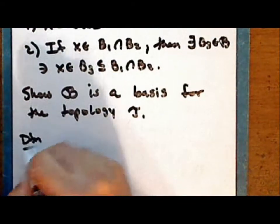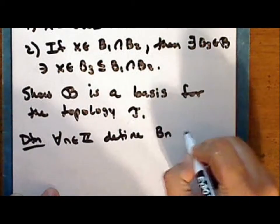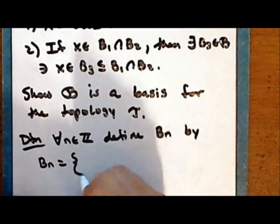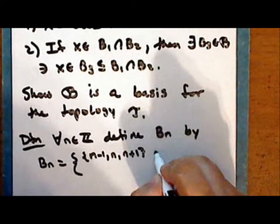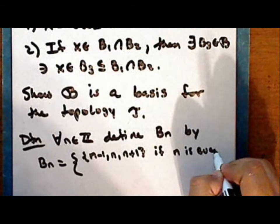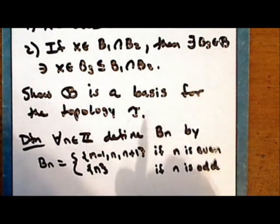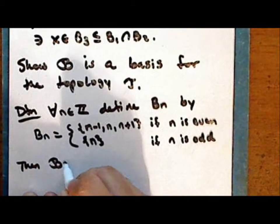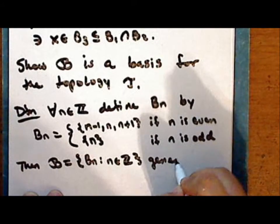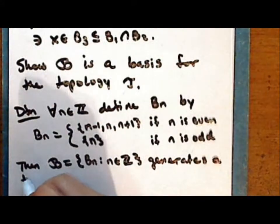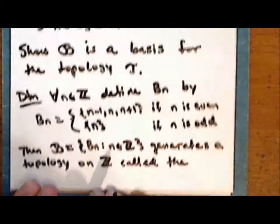New definition. For every integer n, define the element b sub n by: b sub n is the three-point set containing the integers n minus 1, n, and n plus 1, if n is even; and n is the one-point set (singleton) containing the point n if n is odd. Then the collection script B consisting of all these elements generates a topology on the integers called the digital line topology.